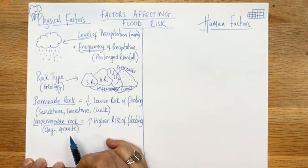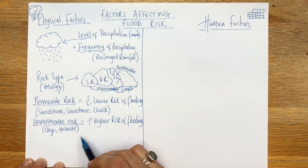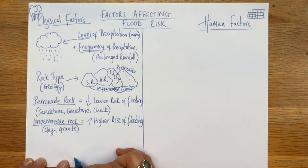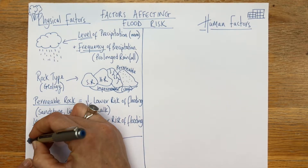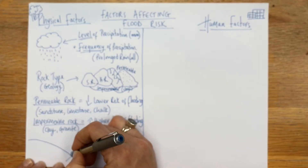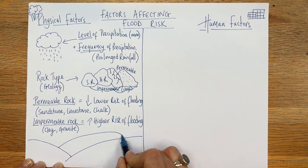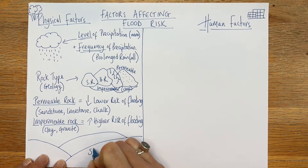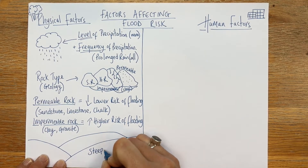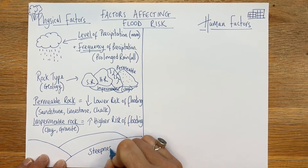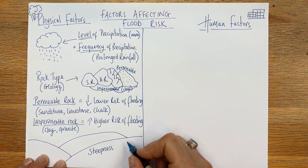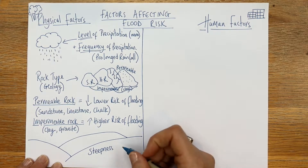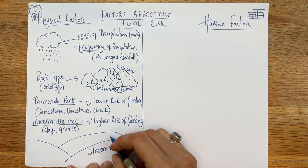The last physical factor is caused by nature: slope steepness. The steeper the slope, the faster the water is going to run off it.